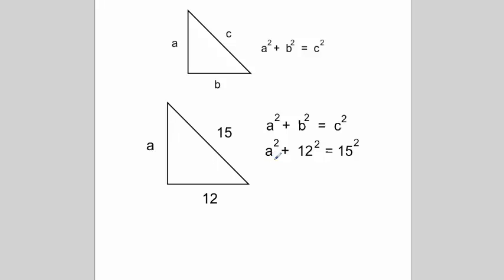But this time we say a squared, we don't try and put a number. b we know, so we can put the number in, 12 squared equals c squared, the long side, 15 squared.